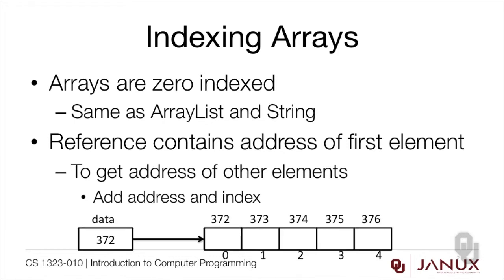Let's take a look at how this works. The 372 shown in the data box is the reference to the first element of the array. The number itself doesn't have any significance, it's just an array address. Notice because they're in contiguous memory locations, the second is at 373, the third is at 374, the fourth is at 375, and so on. So the way that you get to the location in memory is you take 372, the address of the first element, and add the index. For example, address 374 comes from adding 2 to 372. This is actually why we zero index things, so that this equation works.